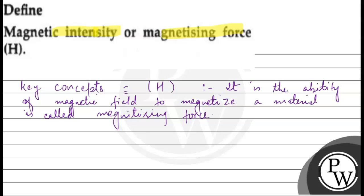If we consider that a solenoid has n turns per unit length and carries current i, then a magnetic field is produced. We write B is equal to μnI. And if we talk about magnetizing force, H is equal to nI. That means B is related to μH. We define B is equal to μ into H.